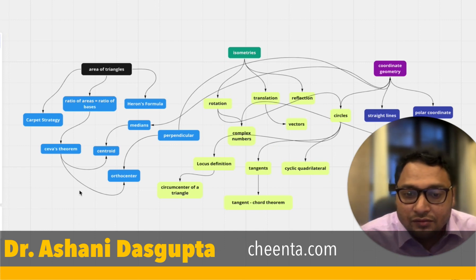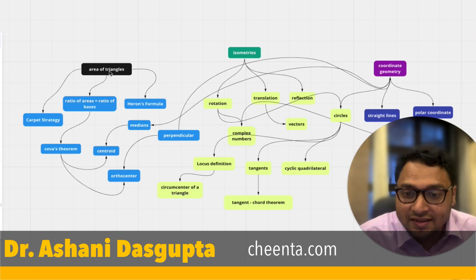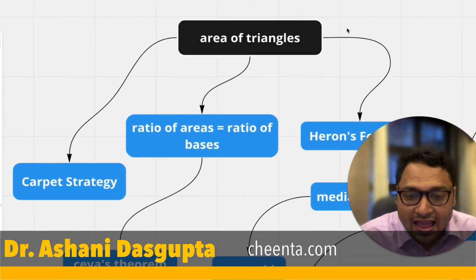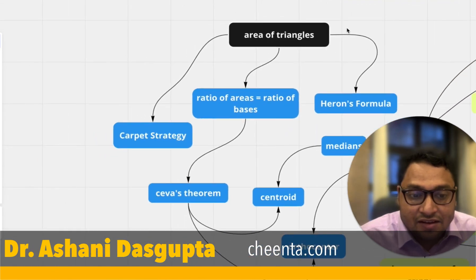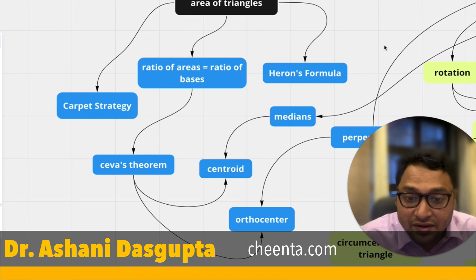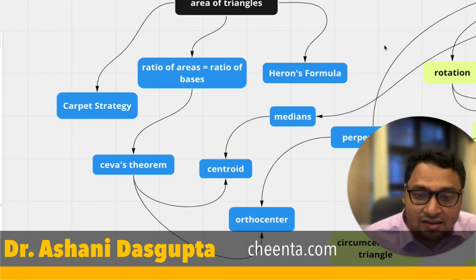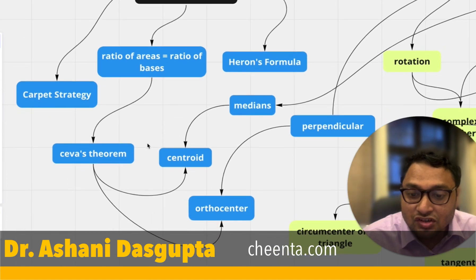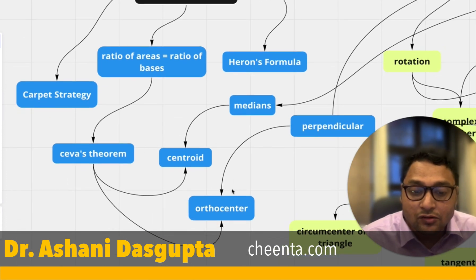The map contains several nodes. For example, you can see the 'area of triangle' node, and it has several sub-nodes: the carpet strategy, ratio of areas of bases, Heron's formula, Ceva's theorem, centroid, median, perpendicular, and orthocenter.